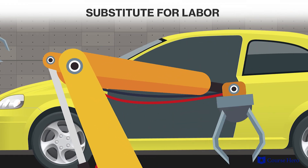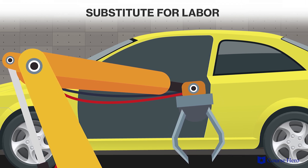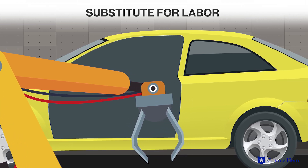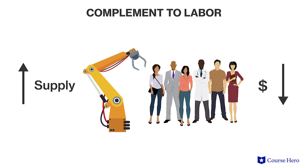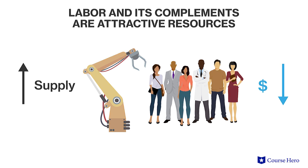A factory may become so automated that it only needs people to supervise the machines, thus reducing demand for labor. When the supply of a complement to labor increases, the price of that resource decreases, but because labor and its complement are used together in production, the price decrease makes both more attractive. Therefore, demand for labor increases when the supply of a complement to labor increases, and decreases when the supply of a complement decreases.